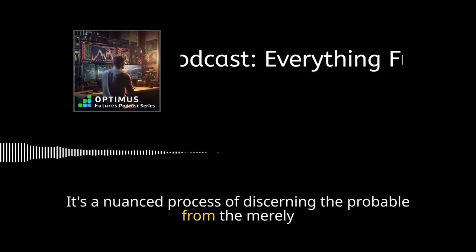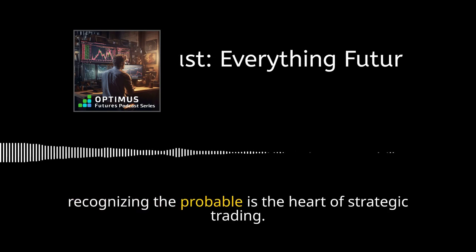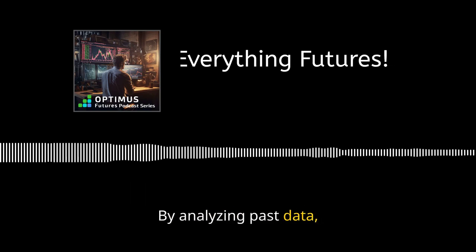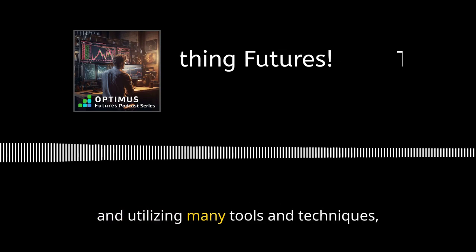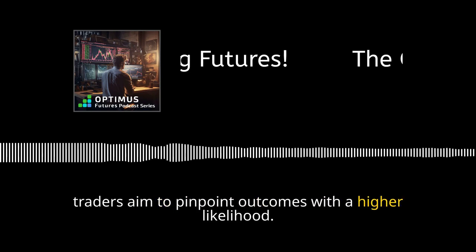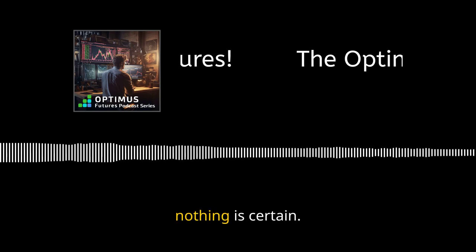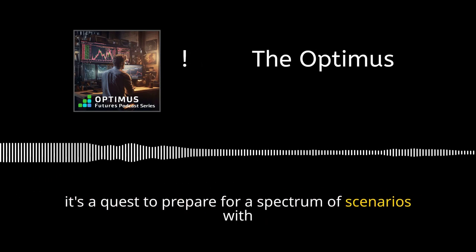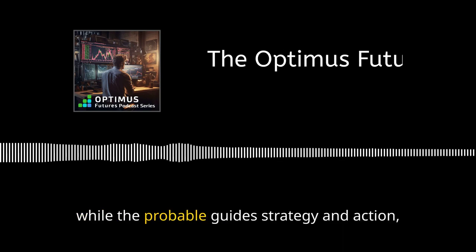This decision-making is not a coin toss — it's a nuanced process of discerning the probable from the merely possible. Recognizing the probable is the heart of strategic trading. By analyzing past data, gauging market sentiment, understanding economic indicators, and utilizing many tools and techniques, traders aim to pinpoint outcomes with a higher likelihood. This is not a pursuit of certainties; instead, it's a quest to prepare for a spectrum of scenarios with varying degrees of probability.